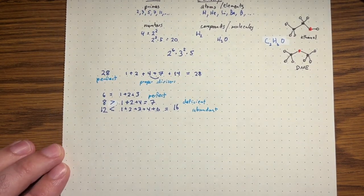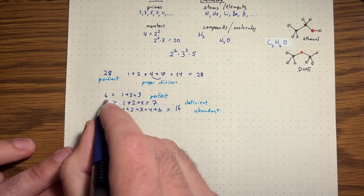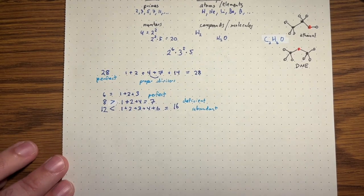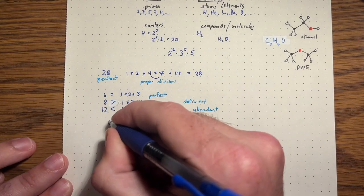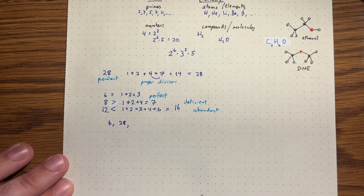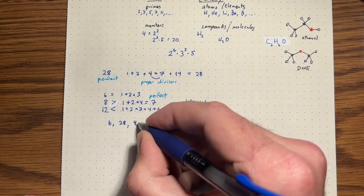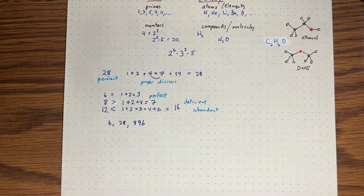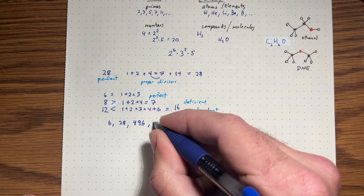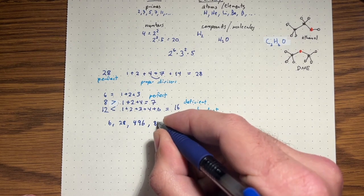Like I said, these are the only two below a hundred, six and 28. We can write out the first few of these, ancient Greeks were very interested in these. The next one is actually 496. And the next one after that is 8,128.